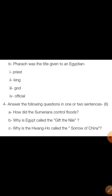The fourth question has three short answer questions where you have to write answers in only one or two sentences. The first is: how did the Sumerians control floods? The second is: why is Egypt called the gift of the Nile? The third is: why is the Huang Ho called the sorrow of China? All these things were discussed when I was explaining the chapter.